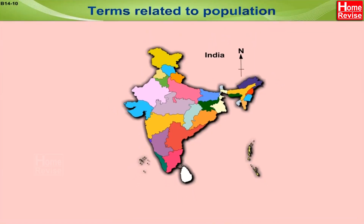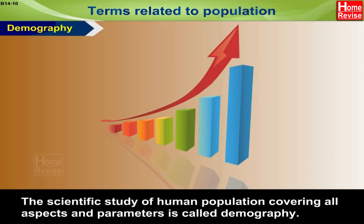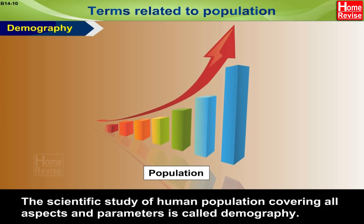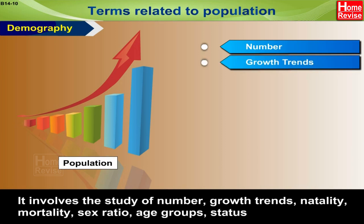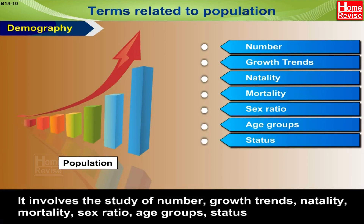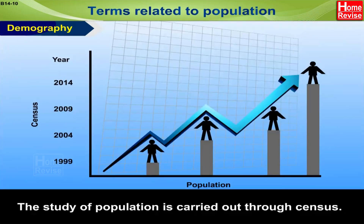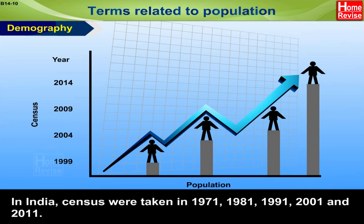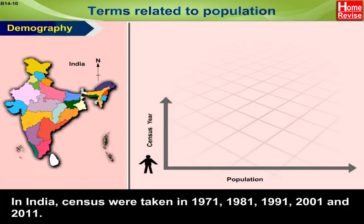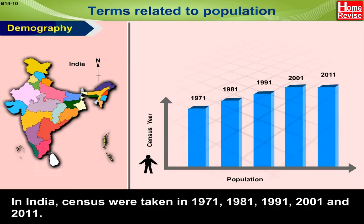Terms related to population. Demography: the scientific study of human population covering all aspects and parameters is called demography. It involves the study of number, growth trends, natality, mortality, sex ratio, age groups, status, and also the future development of human population. The study of population is carried out through census, which is taken every ten years. In India, census was taken in 1971, 1981, 1991, 2001, and 2011.